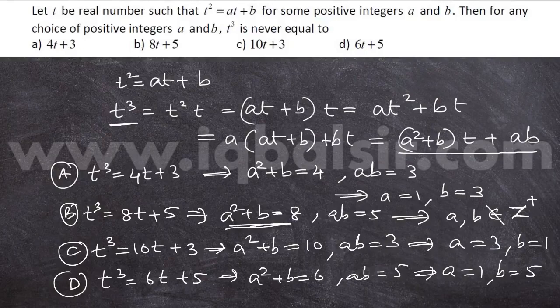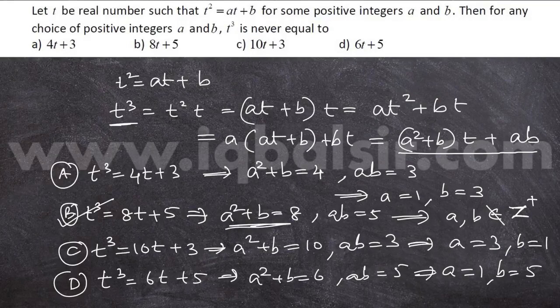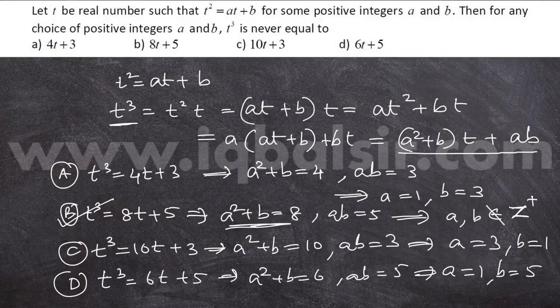In all the cases except B, t cubed was found to be equal to the given option. But in this case, option B, it was not possible. So the right answer is option B.